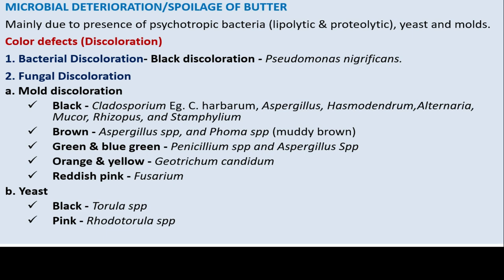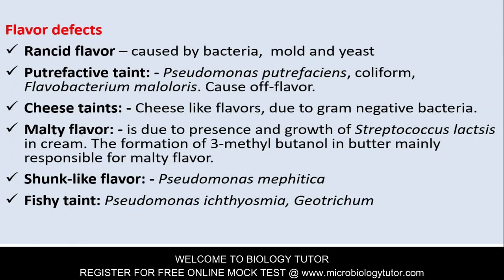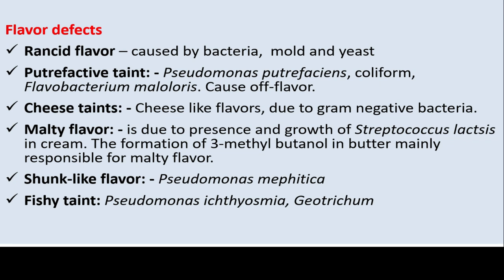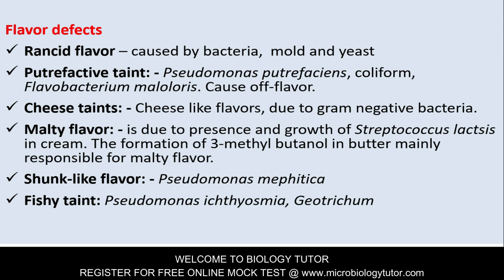Flavor defects in butter: rancid flavor due to bacteria, mold, and yeast; putrefactive taint due to Pseudomonas putrefaciens, Coliform, and Flavobacterium; cheese taint due to gram-negative bacteria; malty flavor due to presence and growth of Streptococcus lactis and formation of 3-methyl butanol in butter; skunky-like flavor due to Pseudomonas mephitica; fishy taint due to Pseudomonas ichthyosmia and Geotrichum.